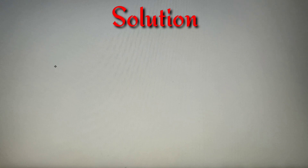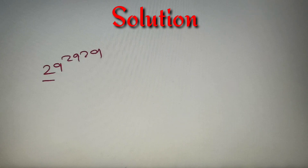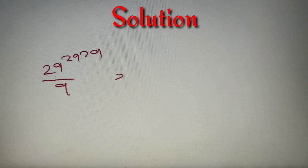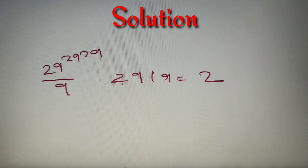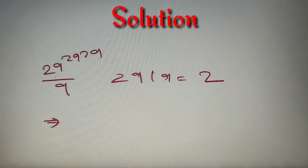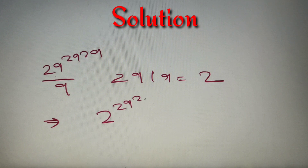According to the given question, we have to find the remainder when 29 raised to power 29 raised to power 29 is divided by 9. The best method for solving such a question is to make the number smaller. When 29 is divided by 9, the remainder is 2, because the nearest multiple of 9 near 29 is 27. So the remainder of 29^(29^29) divided by 9 is equivalent to the remainder of 2^(29^29) when divided by 9.